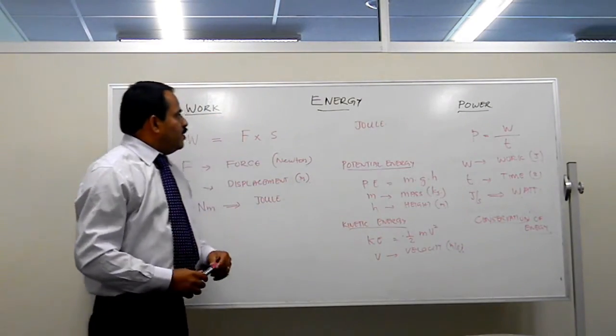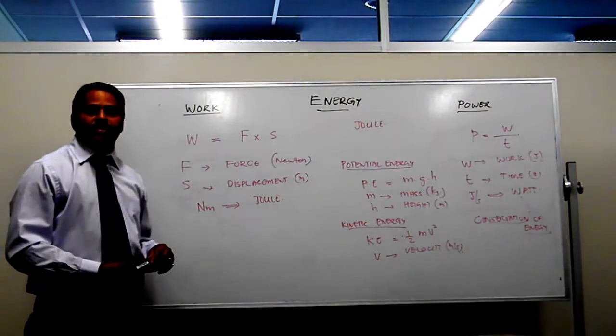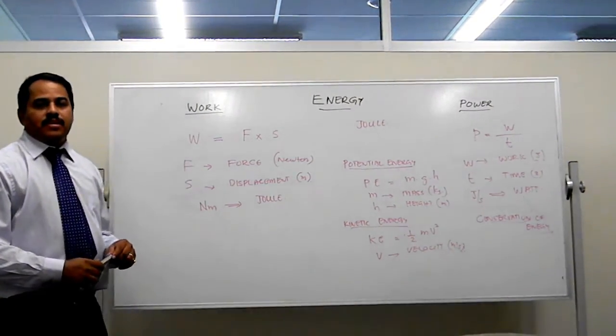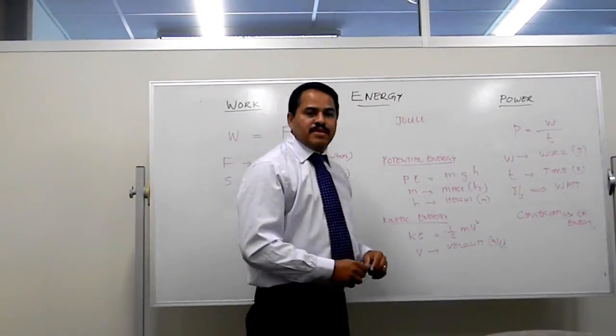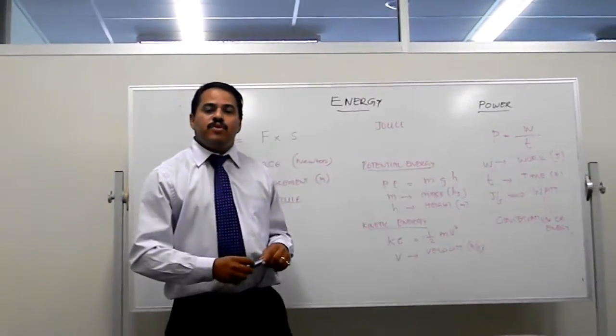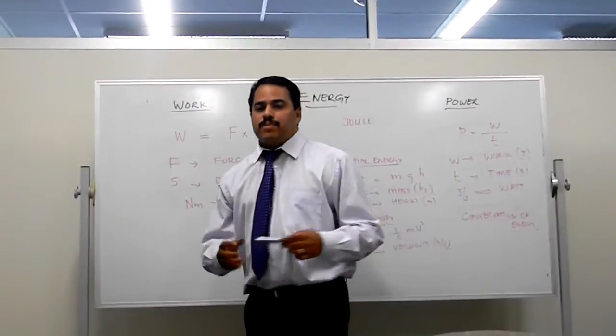These are the concepts we covered. Let us have a recap. Work is the product of force and distance. Energy is the capacity to do work and power is the time rate of doing work.